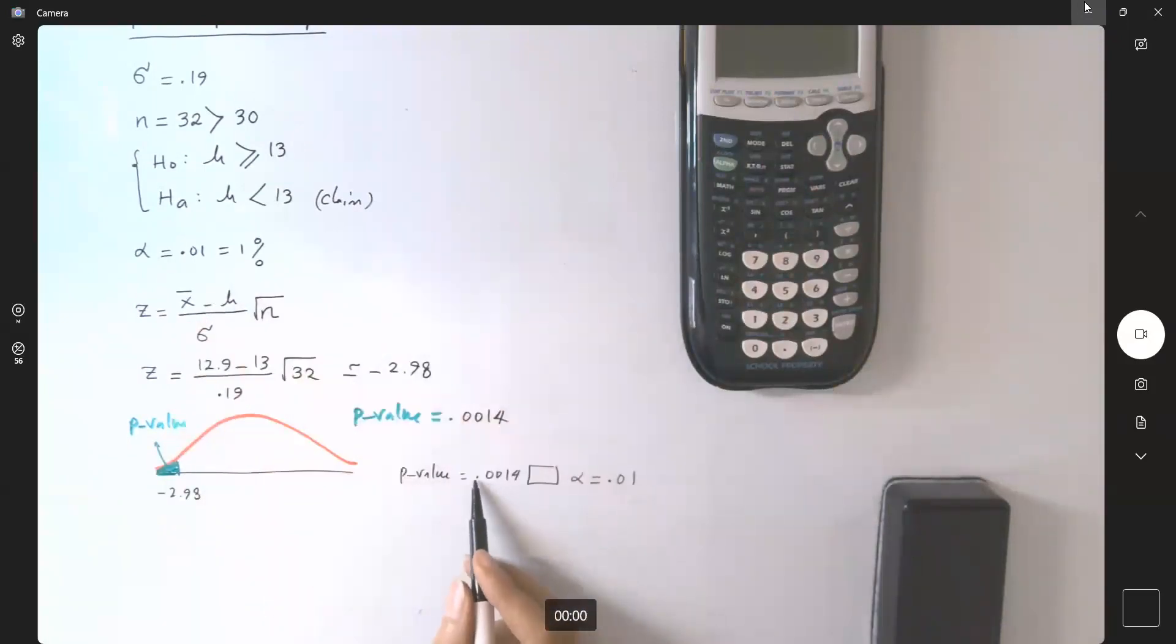Take a look at this. We have 0.0014 and you have 0.01. Of course p-value is less than your alpha. So since p-value is less than alpha, our conclusion is we reject the null hypothesis.